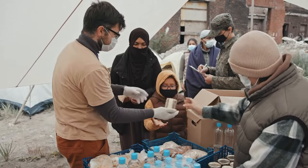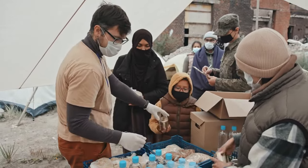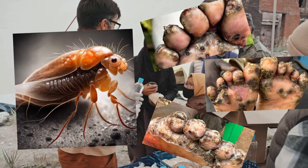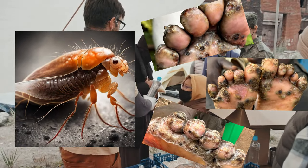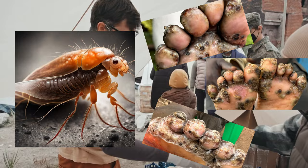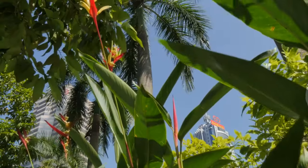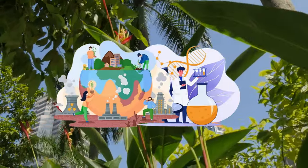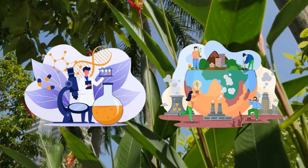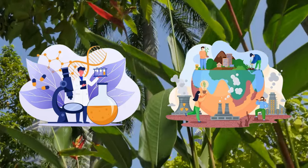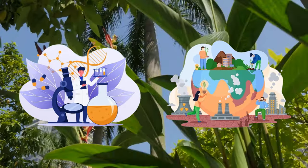Tunga penetrans, commonly known as the Jigger flea, is a notorious culprit behind Tungiasis, a skin inflammatory disease prevalent in communities marked by poor hygiene and indigence. This study delves into the floor-type characteristics and crucial environmental factors contributing to infestations in Egbaokoda, Ondo State, Nigeria.